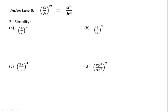We can use this law to simplify the following very quickly. 4 divided by x all squared would be the same as 4 squared over x squared, which simplifies to 16 over x squared. If we have t divided by s to the power of 5, this is the same as t to the power of 5 over s to the power of 5.